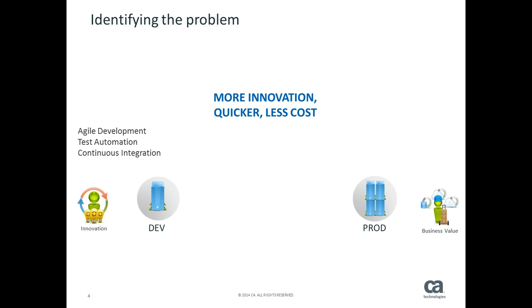These groups haven't been sitting around doing nothing. Development has moved into agile, more companies are starting to automate testing, and we have continuous integration to bring code together and get it out much quicker. From the production side, since the early 2000s more companies are virtualizing servers, provisioning them, and putting configuration management in place — for example, making sure a server is configured as a web server. So from both the development and production sides, a number of things have been put in place over the years to speed up getting something from development into production.